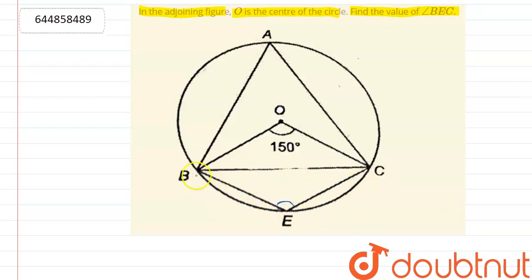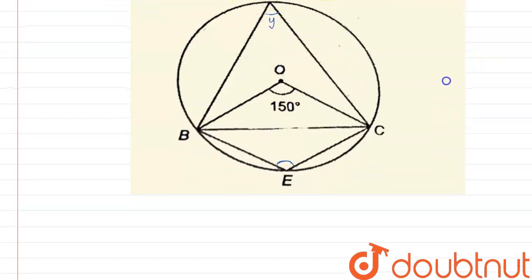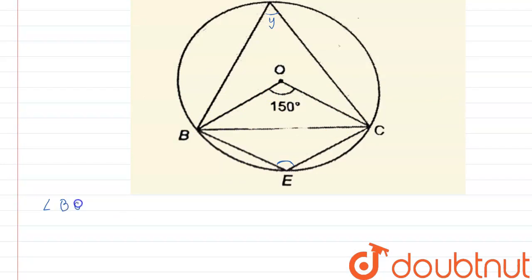So here we say that angle subtended by the arc to the center is twice the angle subtended anywhere on the circumference of the circle. Suppose this angle is Y. So here we say that angle BOC is equal to twice of angle Y, because the angle subtended by the arc at the center is twice the angle at the circumference.